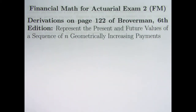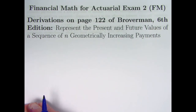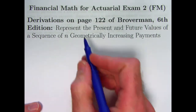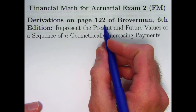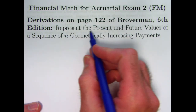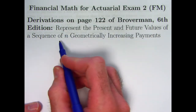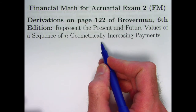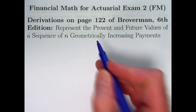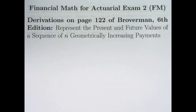In this video I am going to state what the general formulas would be. We're going to derive some formulas that are on page 122 of Brogerman that represent the present and future values of a sequence of n geometrically increasing payments. You don't necessarily have to memorize these things, but it would be good to think about them — and you could memorize them if you want.